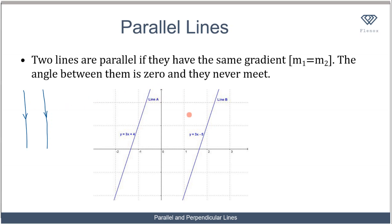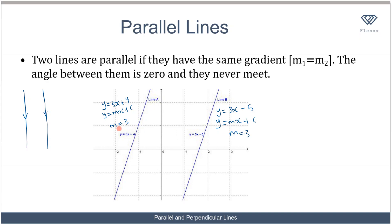Let's look at two lines: line A and line B. Line A is given as y = 3x + 4. Comparing with the general form y = mx + c, we can see the slope of this line is 3. Line B has the equation y = 3x - 5. Comparing with y = mx + c, the slope m is also equal to 3. So the slope of line A equals the slope of line B, which means those two lines are parallel.